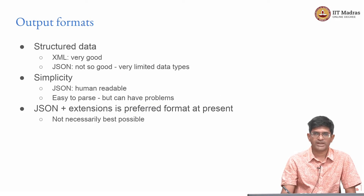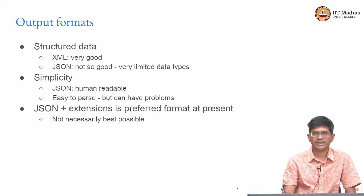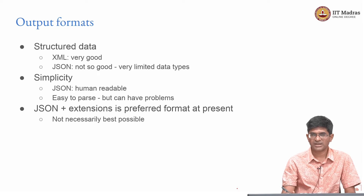A word about output formats — what kind of output format should you use when constructing an API? The important thing to understand is you are usually trying to return some kind of structured data back to the client. You could return the entire HTML they need to see, which is what a Flask-kind system does, but when Flask is operating in API mode you are not really rendering HTML — you want to give the front end the flexibility to render in whatever way it likes.